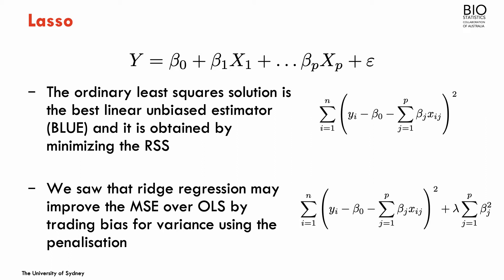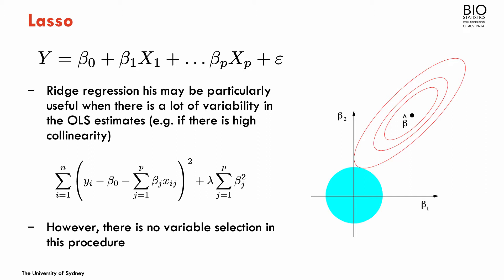We also saw when we talked about ridge regression that the ridge estimator may improve the mean square error of an estimator by trading bias for variance. This is achieved by adding a penalization term to the residual sum of squares — a function of the squared beta parameters. The ridge estimator is particularly useful when the ordinary least squares estimator is unstable, for example in situations with a lot of collinearity in the data, which creates high variance or high standard errors.